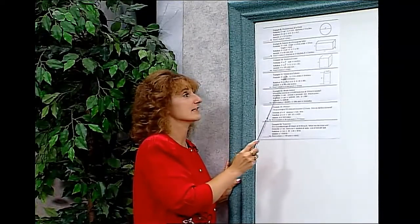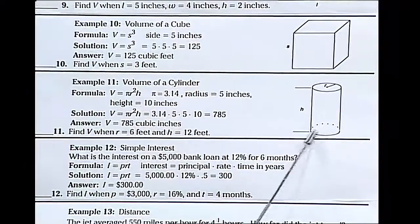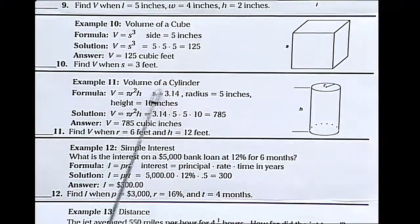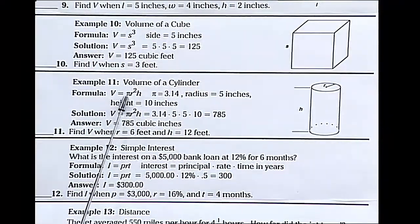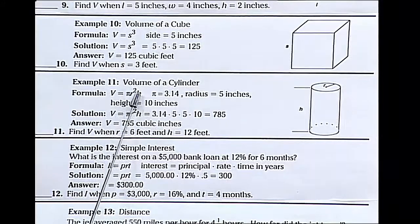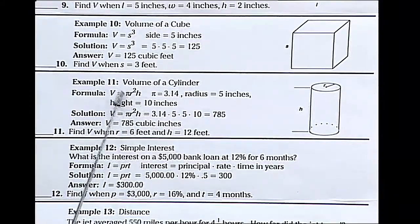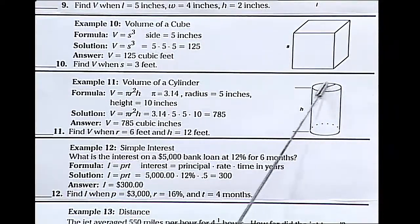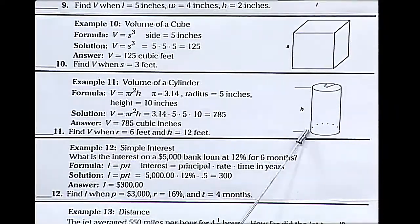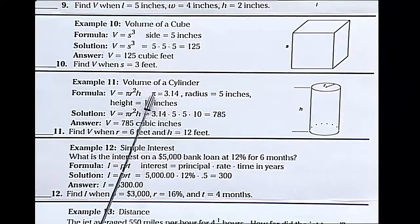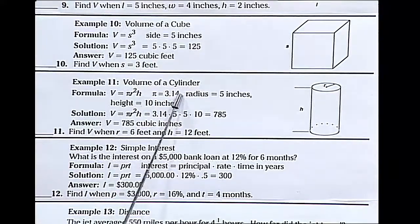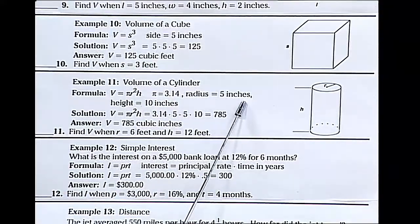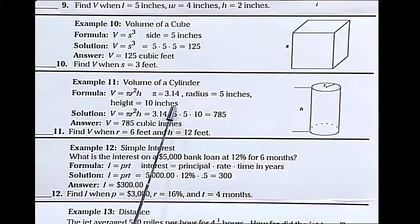When we get to the cylinder, which looks like a can, to find the volume, we have to do pi r squared h. This means pi times the radius squared times the height. Our values: pi is 3.14, the radius is 5 inches, and the height is 10 inches.